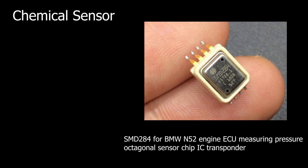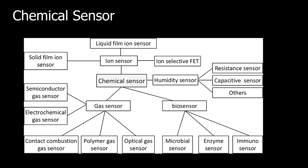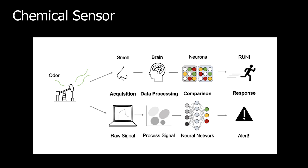In the recognition step, analyte molecules interact selectively with receptor molecules or sites included in the structure of the recognition element of the sensor. Consequently, a characteristic physical parameter varies, and this variation is reported by means of an integrated transducer that generates the output signal. A chemical sensor based on recognition material of biological nature is a biosensor. However, as synthetic biomimetic materials are going to substitute to some extent recognition biomaterials, a sharp distinction between a biosensor and a standard chemical sensor is superfluous.